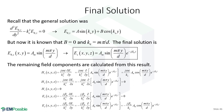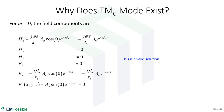Substituting back into the field-component equations gives all other TM field components. Setting M = 0 in the TM expressions yields a nonzero, uniform electric and magnetic field — this is precisely the TEM mode. So TM0 is the TEM mode, confirming its existence and providing a more rigorous derivation.